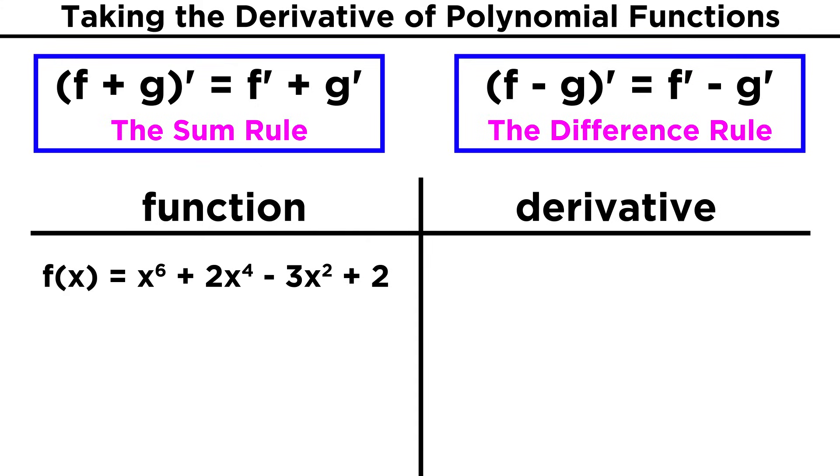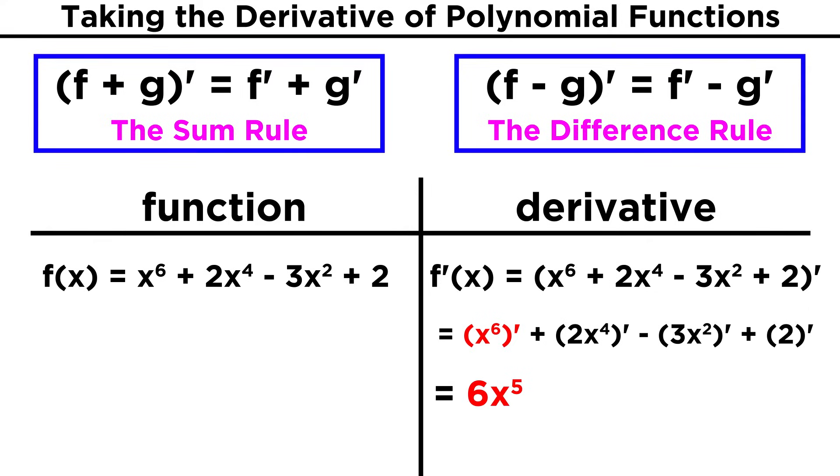Similarly, there is the difference rule, which works just like the sum rule, stating that f minus g quantity prime equals f prime minus g prime. That means that no matter how many terms are in a polynomial, we will just take the derivative of one term at a time. So for x to the sixth plus two x to the fourth minus three x squared plus two, we can just go from left to right to get six x to the fifth plus eight x cubed minus six x. Don't forget that the two will go away, as it's a constant. So, as long as we know the power rule, taking the derivative of any polynomial in standard form is actually quite trivial.